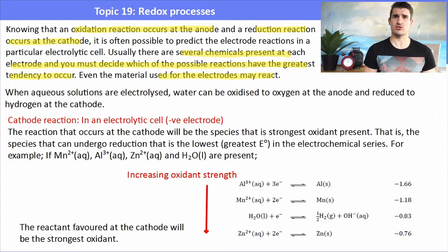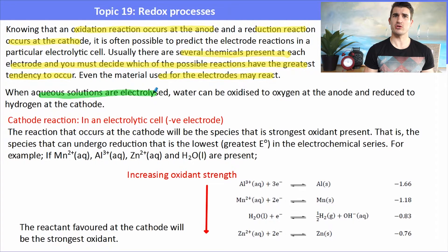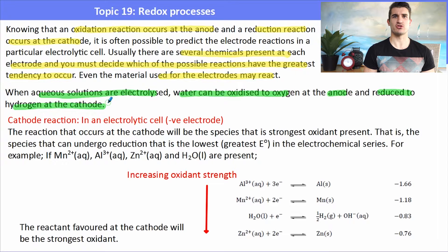Even the electrodes themselves may react in an electrolytic cell. When an aqueous solution is electrolyzed we have water present, and water can be oxidized to oxygen at the anode and reduced to hydrogen at the cathode.